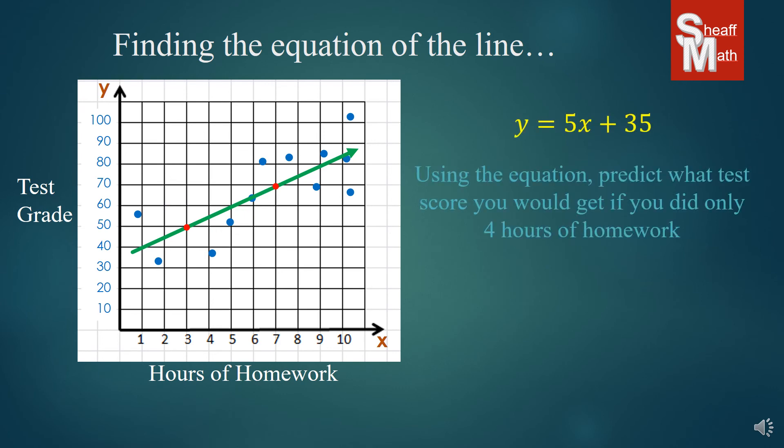We have our equation, and let's say you were given this question: using the equation, predict what test score you would get if you did only four hours of homework. So you're in a class, and the teacher tells you the more homework you do, the better test grade you'll get. You ask, how much homework? Well, we did a study on the last test, and here's what happened. The trend was that if you did four hours of work, well, if you go up and see where that line crosses, it looks like it's between 50 and 60. But let's mathematically find out exactly what it is. We're going to take 4, put it in place of x, and simplify and solve for y.